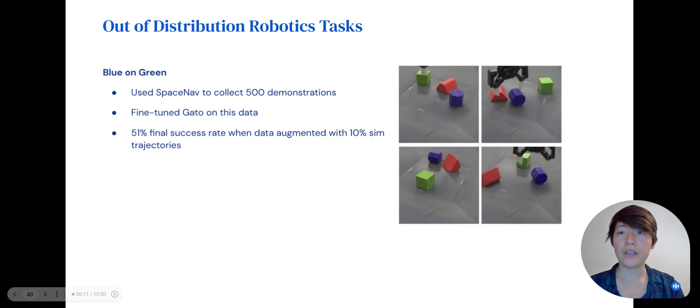In addition to the canonical RGB stacking tasks, we tested Gato's generalization capability to a novel task where the goal is to stack the blue object on the green object. In all of the pre-training data, the robot stacks the red object on the blue object and doesn't even interact with the green object. So this is an in-domain task transfer challenge. We fine-tuned Gato on 500 teleoperated demonstrations of the blue on green task. We augmented it with simulation data of an agent doing the same task with different objects, and we achieved 51 percent success rate when evaluated on the real robot.